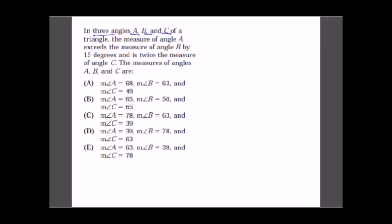The next question: in a triangle with angles A, B, and C, the measure of angle A exceeds the measure of angle B by 15 degrees and is twice the measure of angle C. We are told that A = B + 15, so B = A − 15.